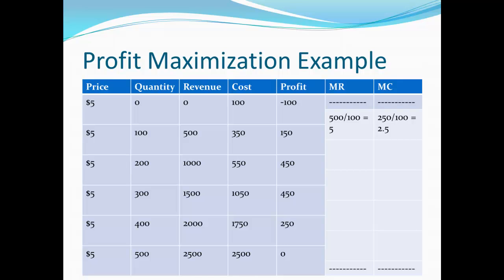Meanwhile, marginal cost is the change in cost divided by the change in quantity. In this case, cost goes from 100 up to 350 — that's a change of $250 — while quantity changes from 0 to 100, a change of 100. 250 divided by 100 is 2.5, or $2.50.